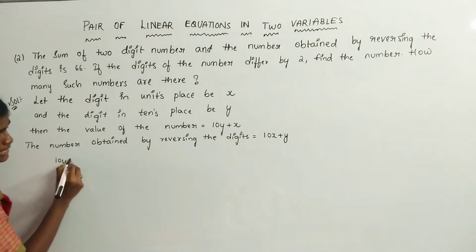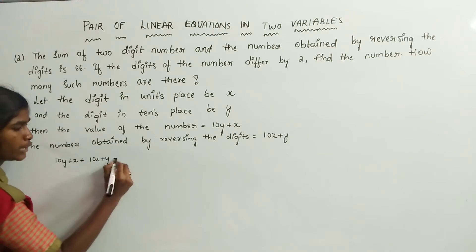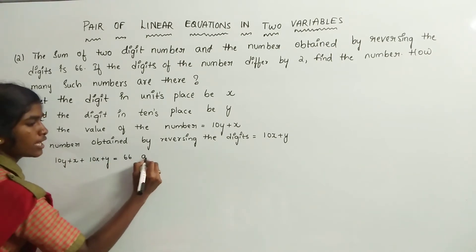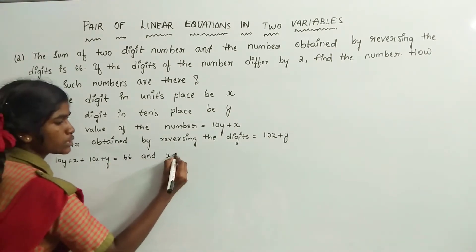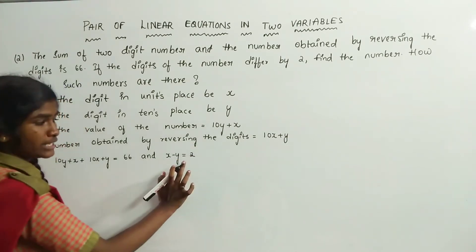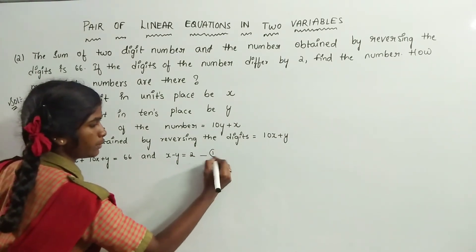Now, 10y plus x plus 10x plus y is equal to 66, and x minus y is equal to 2. This is the first equation.